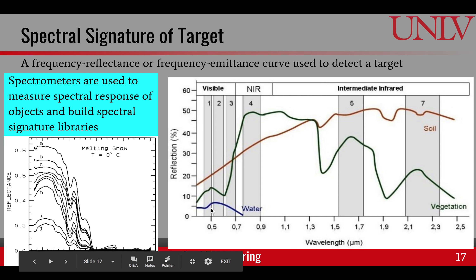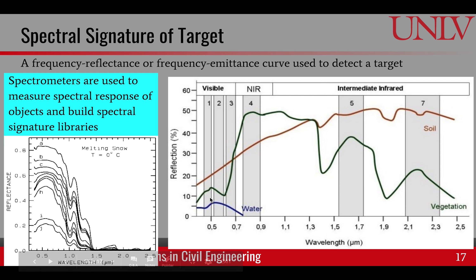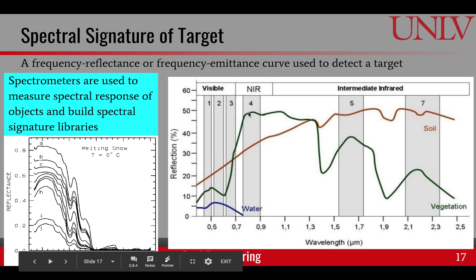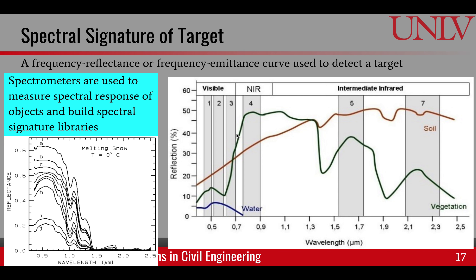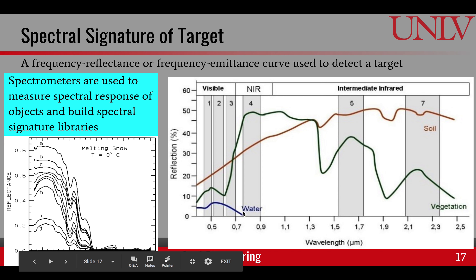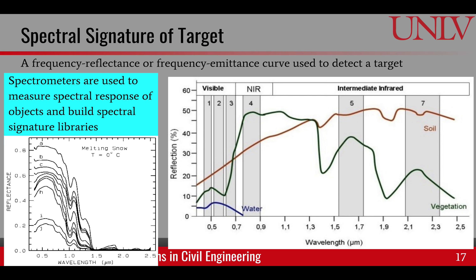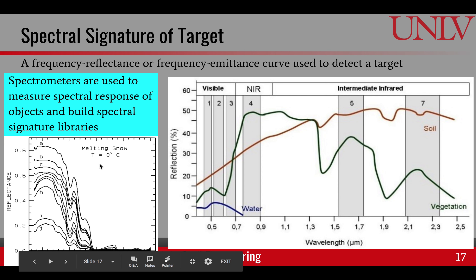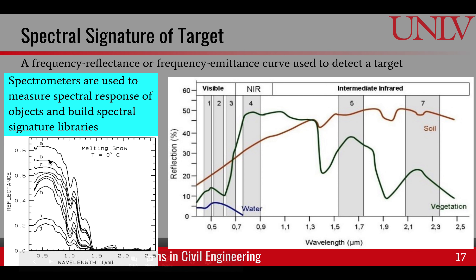Vegetation has a high value in green and low value in blue and red, but then in near-infrared it has a very high value — this is also called the red edge. When we see this difference in red and infrared, we know this is vegetation. Similarly, soil and water have their own very specific spectral signatures. Spectrometers are used to measure spectral response of objects, usually in a lab, and that information can be used for data retrieved using remote sensing sensors. For example, here is a spectral signature of melting snow at different temperatures.